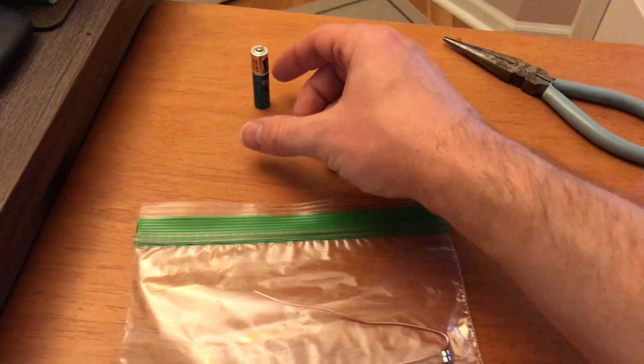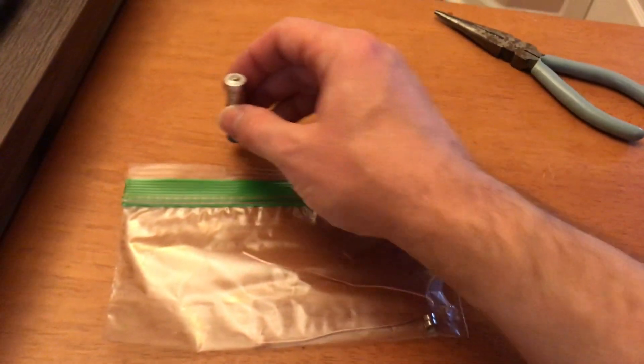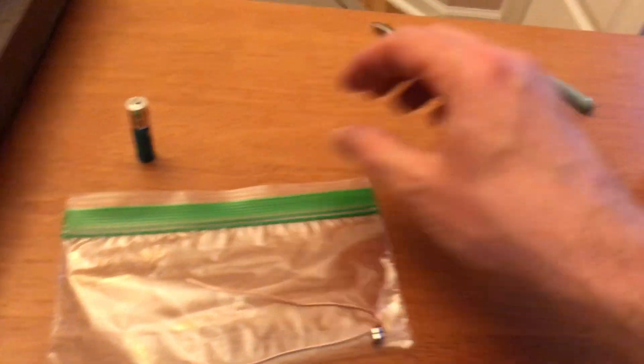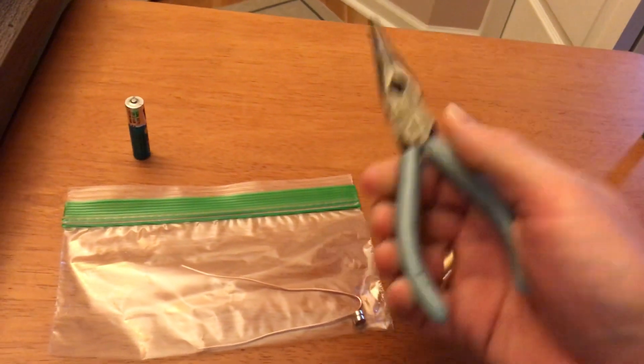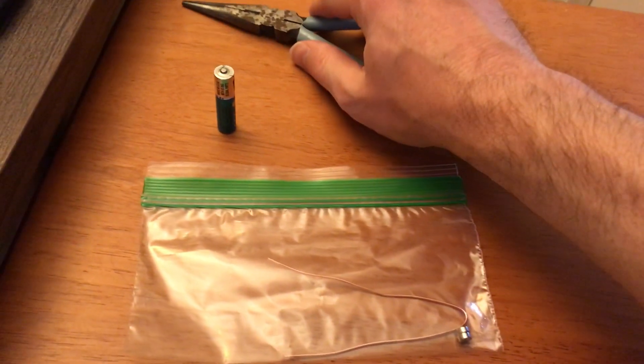The one other thing you have to provide is a triple-A battery, and it also helps if you use a set of needle nose pliers, but you don't have to. It might be useful to have something like that handy.